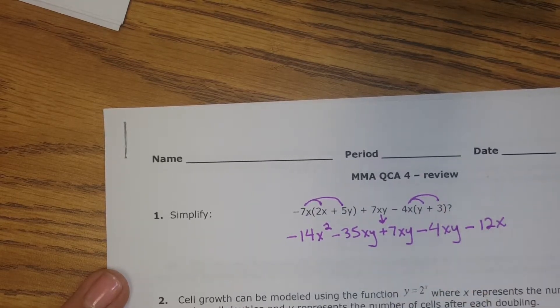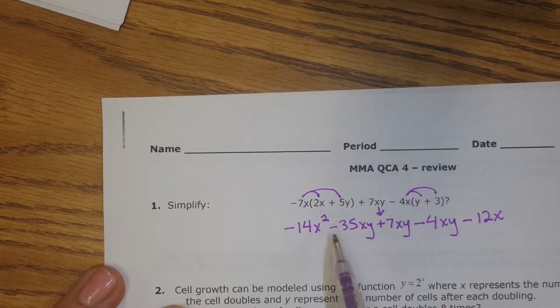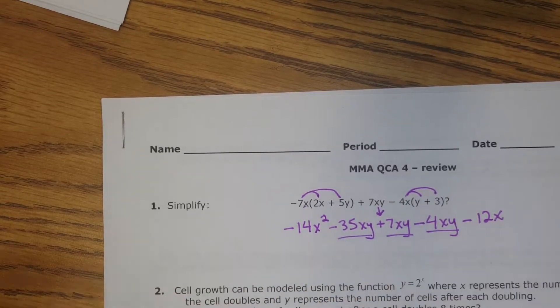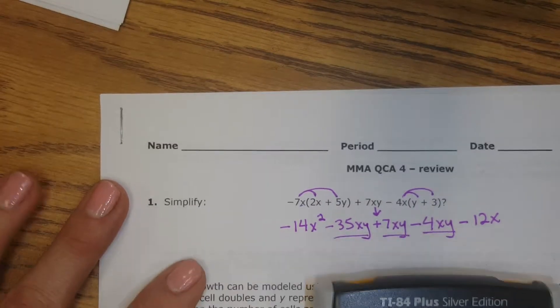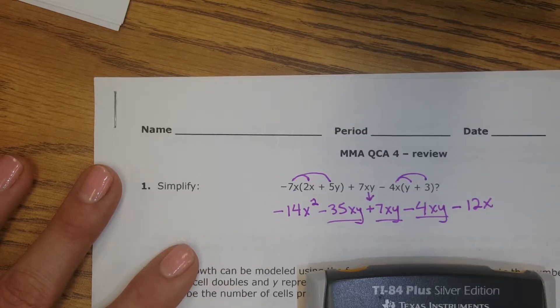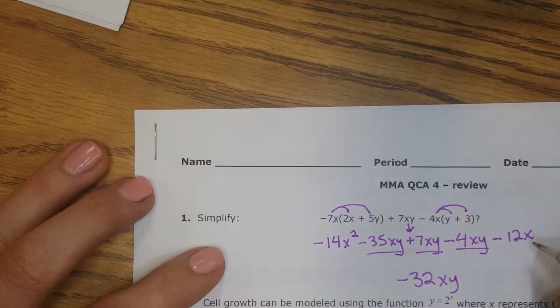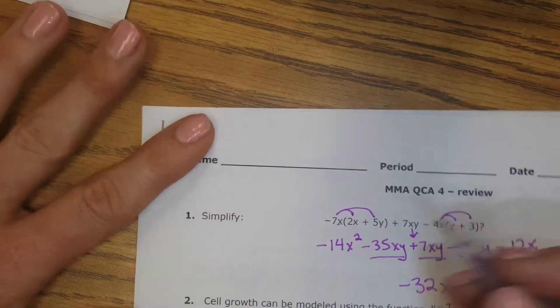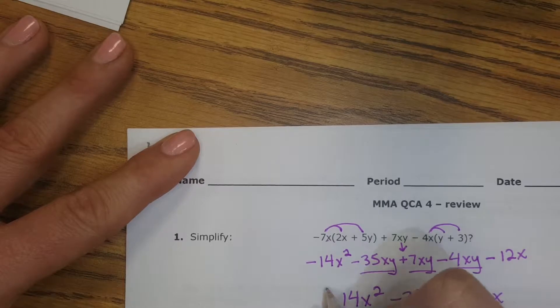Negative 4 times positive 3 is negative 12. So now I can combine like terms. All of these three middle terms have an x and a y, so they can combine together. Combining means adding and subtracting. So I just have negative 35 plus 7 minus 4, and so I get negative 32xy. And then I'm just going to bring down my terms that I did not combine. So negative 14x squared and negative 12x. And so that's my final answer.